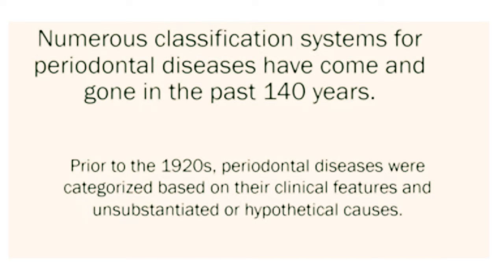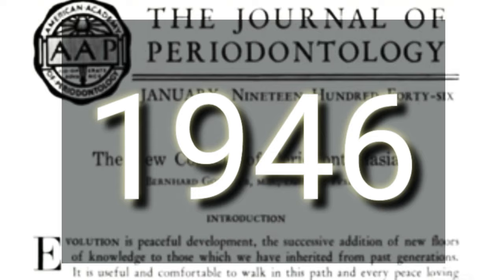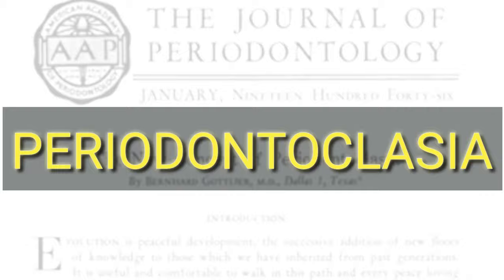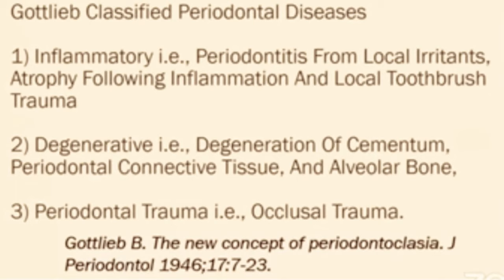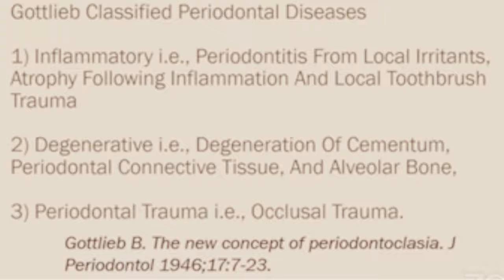Next, we come to the landmark studies on classifications. Before the 1920s, periodontal diseases were categorized based on their clinical features and hypothetical causes. In the early part of the 20th century — in 1946 — Gottlieb called the current concept of periodontitis 'periodontoclesia' and grouped it into three categories: inflammatory, degenerative, and periodontal trauma (i.e., occlusal trauma).